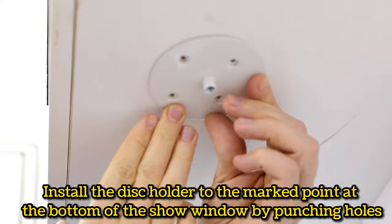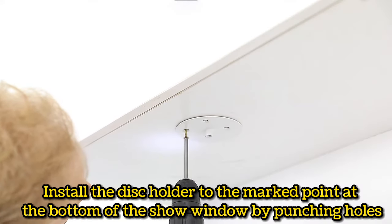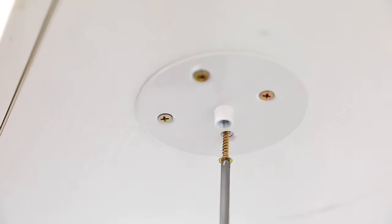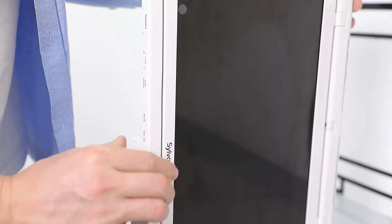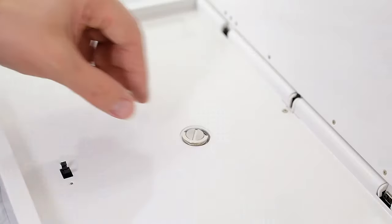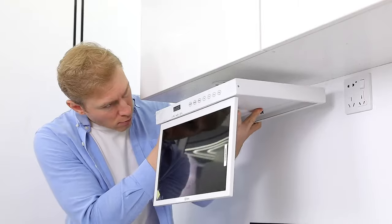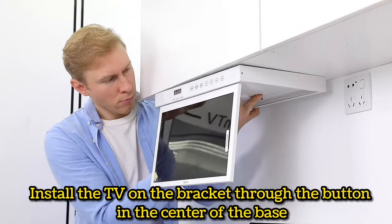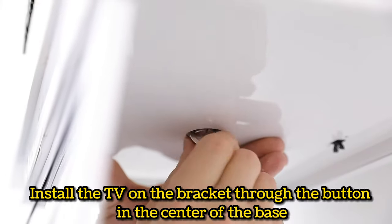Install the disk holder to the marked point at the bottom of the show window by punching holes. Install the TV on the bracket through the button in the center of the base.